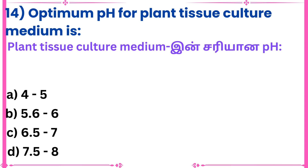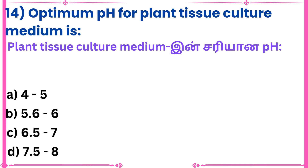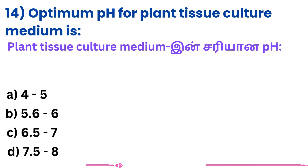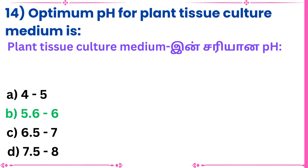Question 14: What is the optimum pH for plant tissue culture medium? Answer: 5.6 to 6.